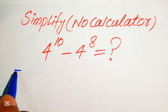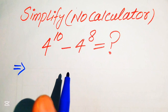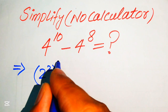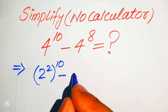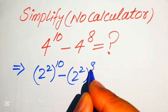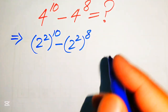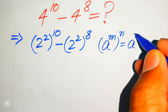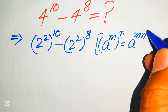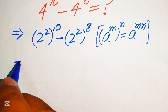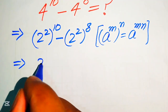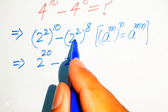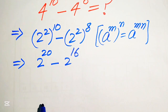First we need to focus on the bases of this expression. The base of both of these terms is 4. We write this 4 as 2 squared, so its whole power is 10, minus 2 squared to the whole power of 8. Now we apply the exponent law: if you have a to the power of m to the power of n, it equals a to the power of m multiplied by n. According to this law, we multiply the two exponents: 2 to the power of 2 times 10 becomes 20, minus 2 to the power of 2 times 8 becomes 16.